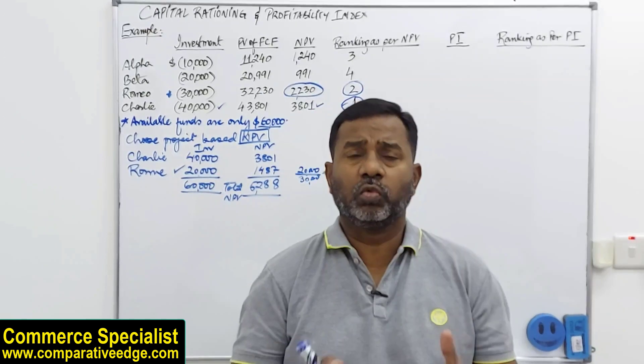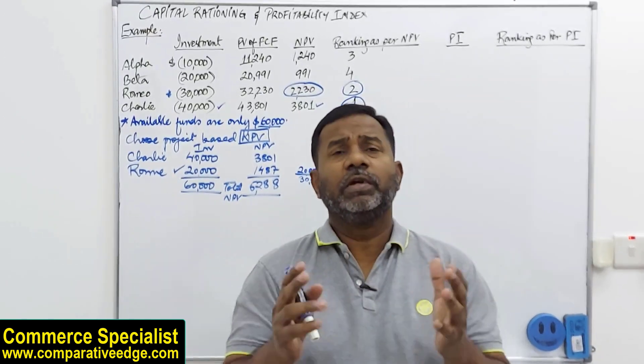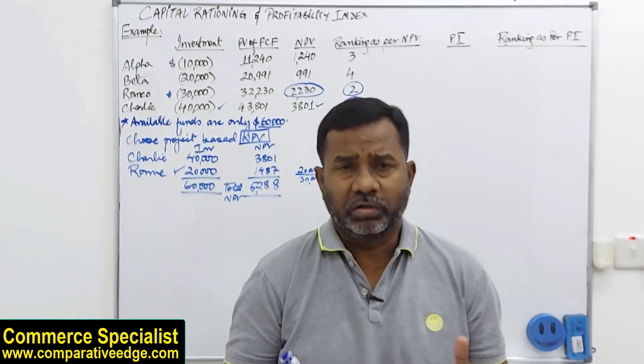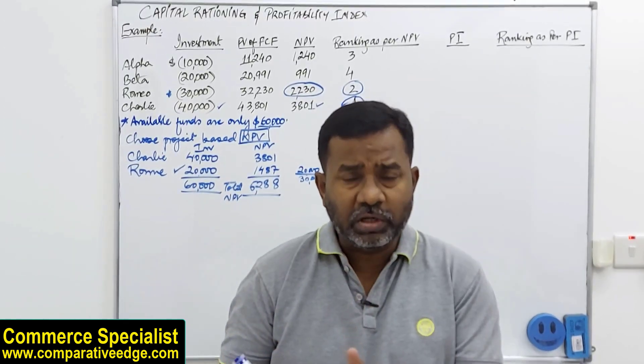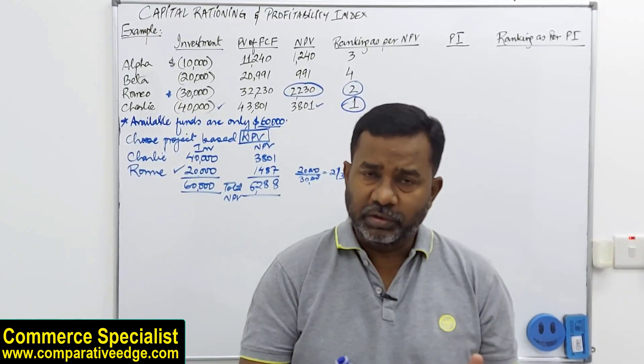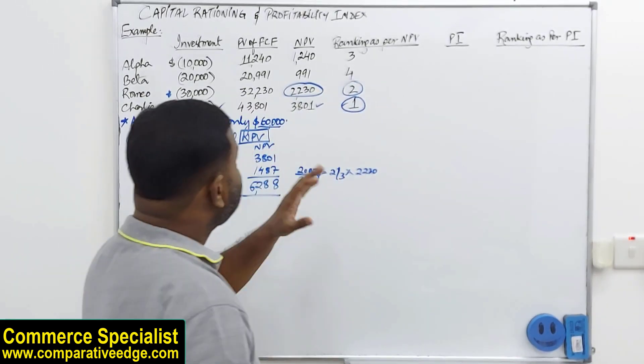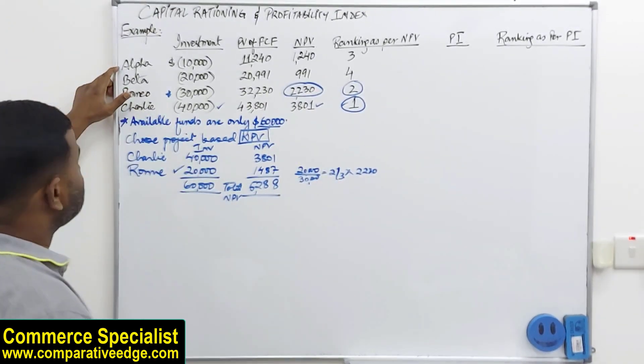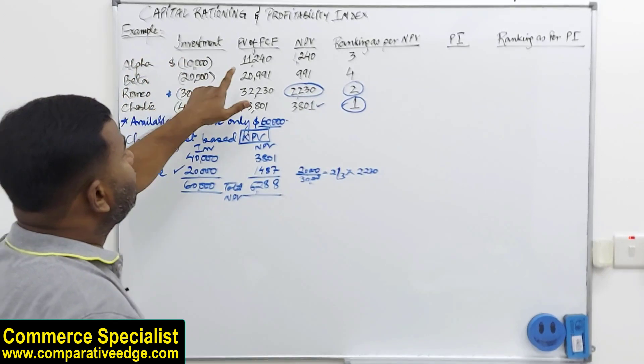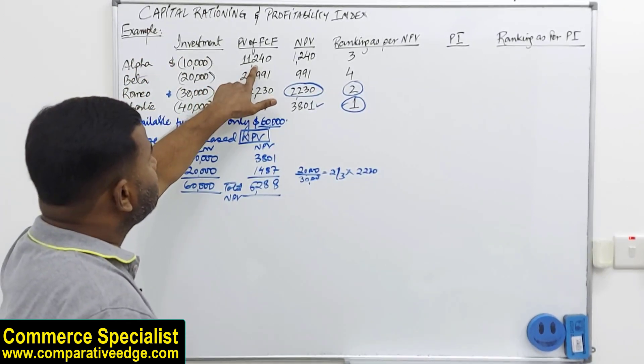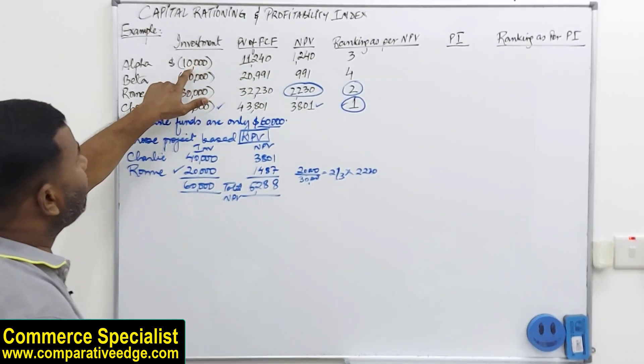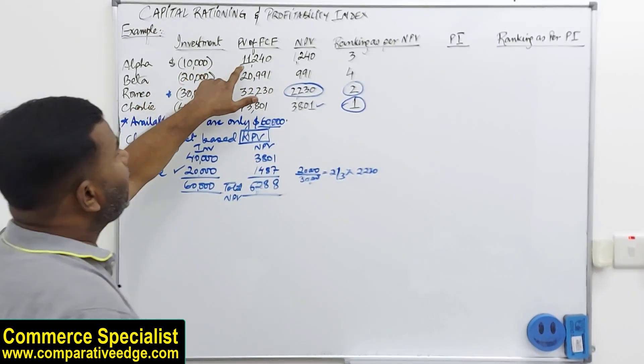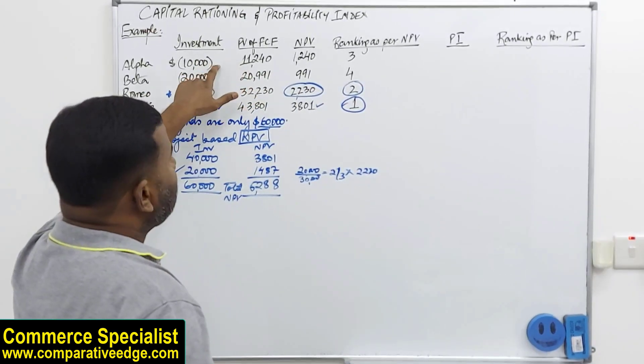So first of all, you need to understand what is profitability index. Profitability index is a measure which compares the present value of future cash flows of a project with its initial investment. So if I calculate profitability index of my very first project, if you look at the present value of future cash flows is 11,240 and its initial investment is 10,000. So if I divide 11,240 by 10,000...